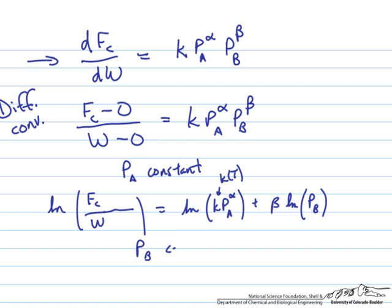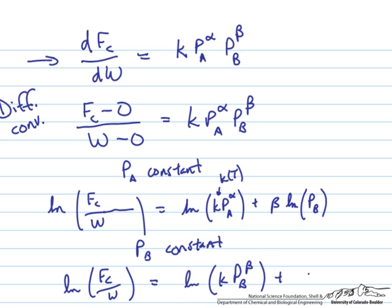And then if you can imagine that if the partial pressure of B is constant, we can do an analogous thing, where the log of Fc over W is equal to the log of k Pb to the beta power, where Pb is held constant, plus alpha log of Pa. And so this is sort of similar to the differential analysis that we've seen earlier.